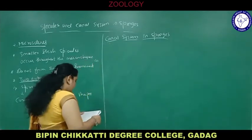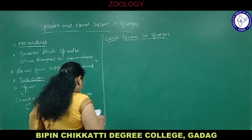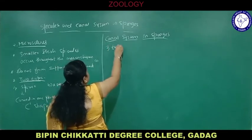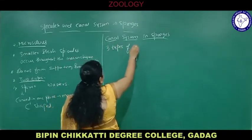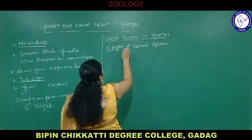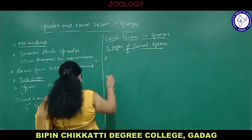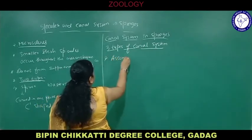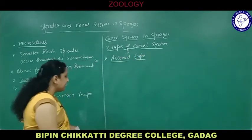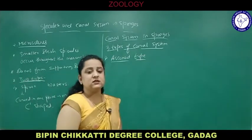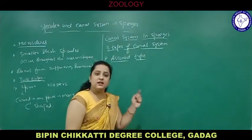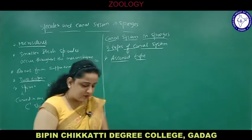All the cavities of the body collectively form the canal system. There are three types of canal system: number one, asconoid type; number two, syconoid type; and number three, leuconoid type.